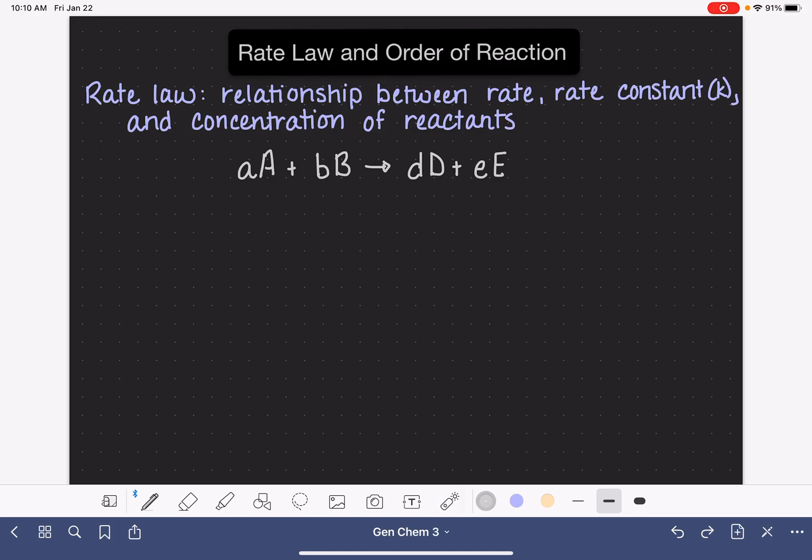If we wanted to write the rate law for this type of generic reaction, it would look like this. We would say the rate of the reaction is equal to the rate constant, little k, and remember the rate constant is specific to a chemical reaction, it's not a constant like Avogadro's number.